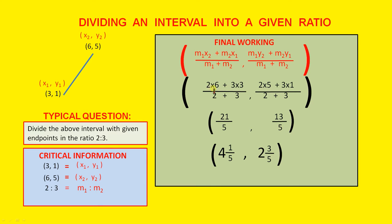So m1·x2 is 2 times 6 plus m2·x1 is 3 times 3 over m1 plus m2, which is 2 plus 3. Now that is the x coordinate. Now, m1·y2 is 2 times 5 plus m2·y1 is 3 times 1 over m1 plus m2, which is 2 plus 3.